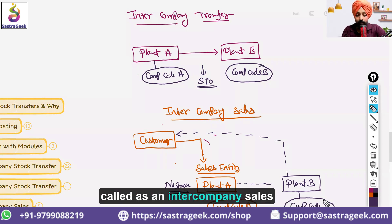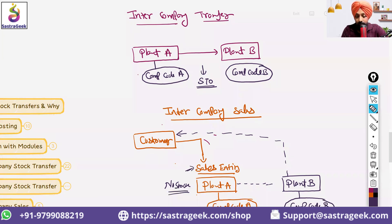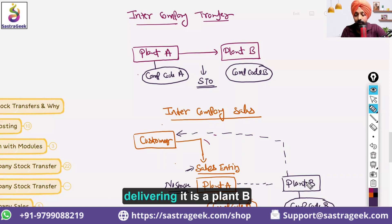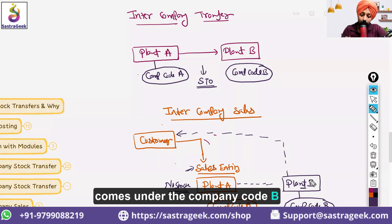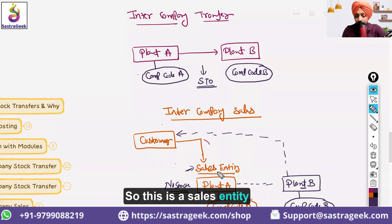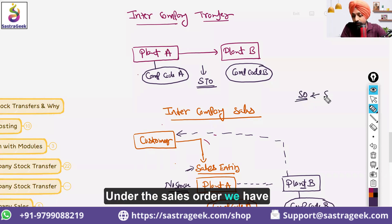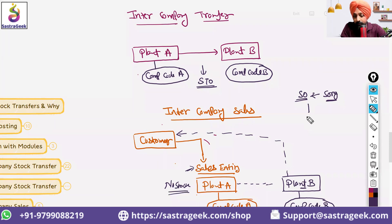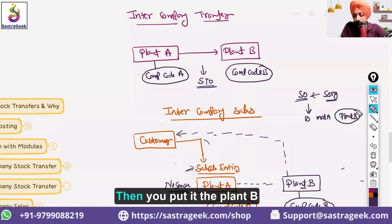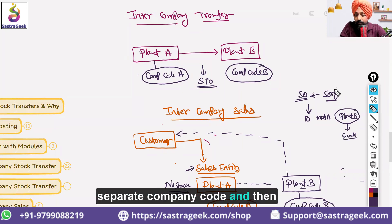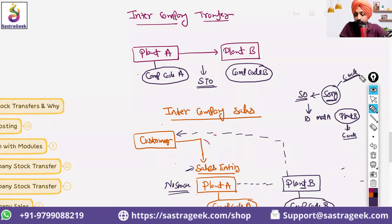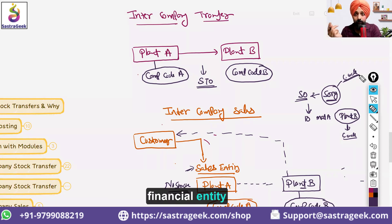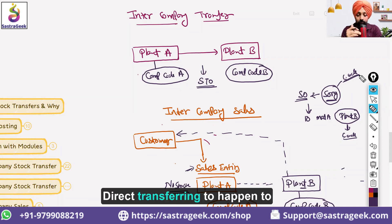This scenario is called intercompany sales — where the sales entity booking the sales comes under Company Code A, but the delivery entity, Plant B, comes under Company Code B. This kind of scenario happens when you create a sales order under a sales organization belonging to one company code, and under item 10 you put Material A with Plant B, which belongs to a separate company code. The sales organization belongs to a separate company code as well.